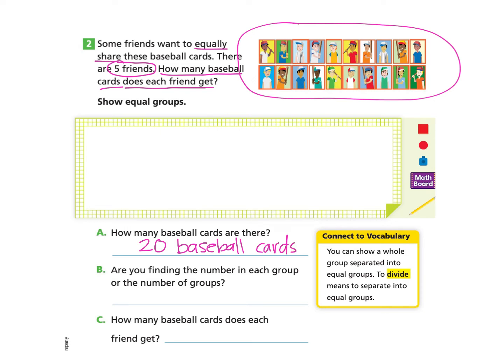Let's look at Part B. Are you finding the number in each group or the number of groups? Well, let's take a look at our word problem. The information shows that there are 5 friends and they all equally share these cards. So I'm not looking for the number of groups. I'm looking for the number in each group, because I know that the number of groups is going to be 5, because there are 5 friends. Let's write that in — we are looking for the number in each group.